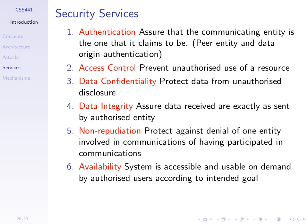Data integrity means making sure data received is exactly as sent by the authorized entity — nothing modified along the way, and nothing modified at rest. If someone accesses my computer and modifies a file without my knowing, that's an attack on the data integrity service even if the data was never sent across a network. Authentication means making sure that the entities communicating are as they say they are — the masquerade attack is defeated by the authentication service.